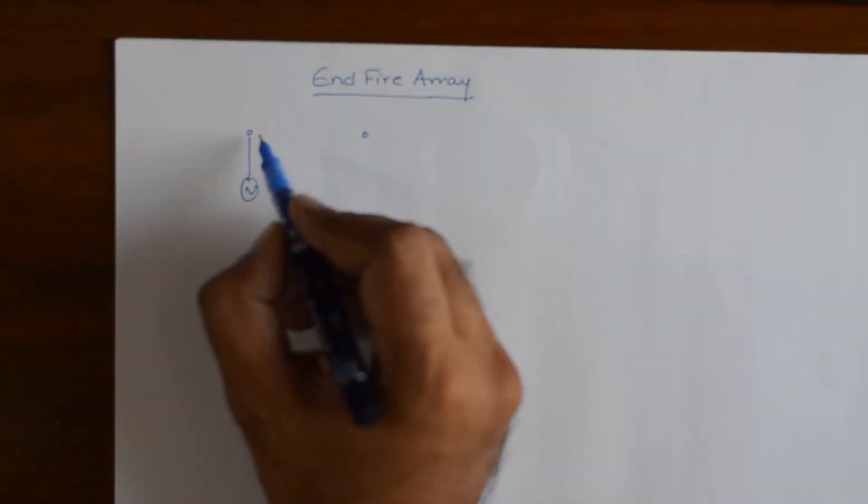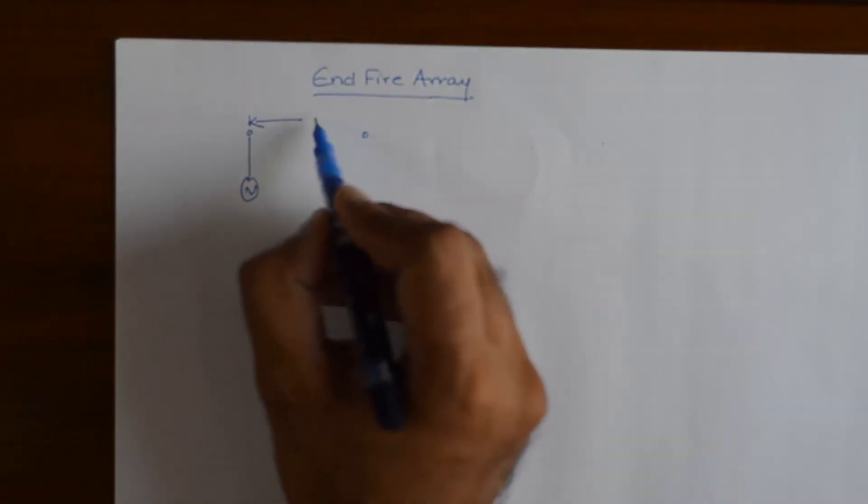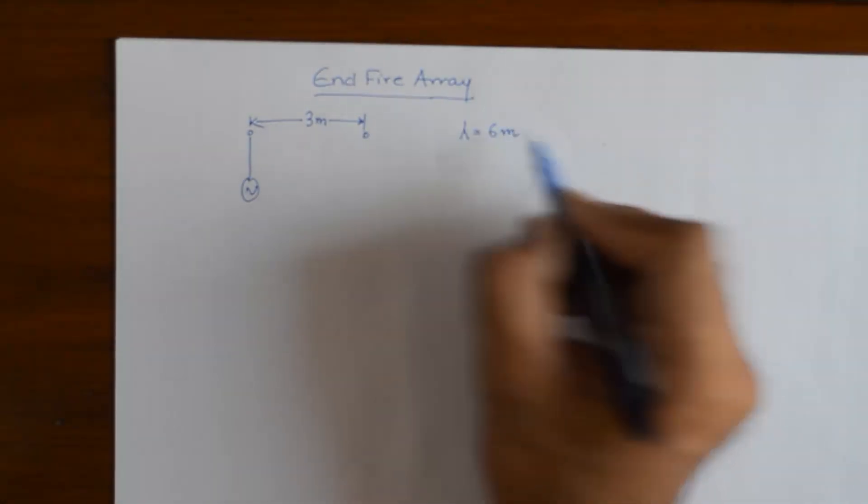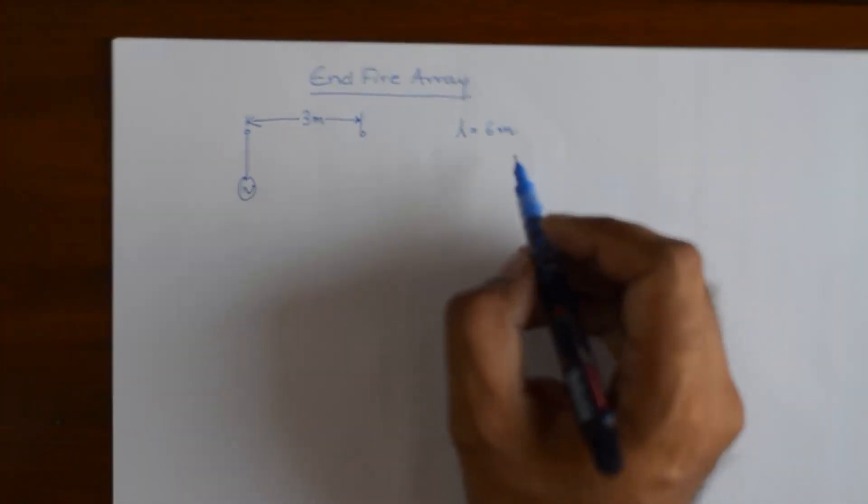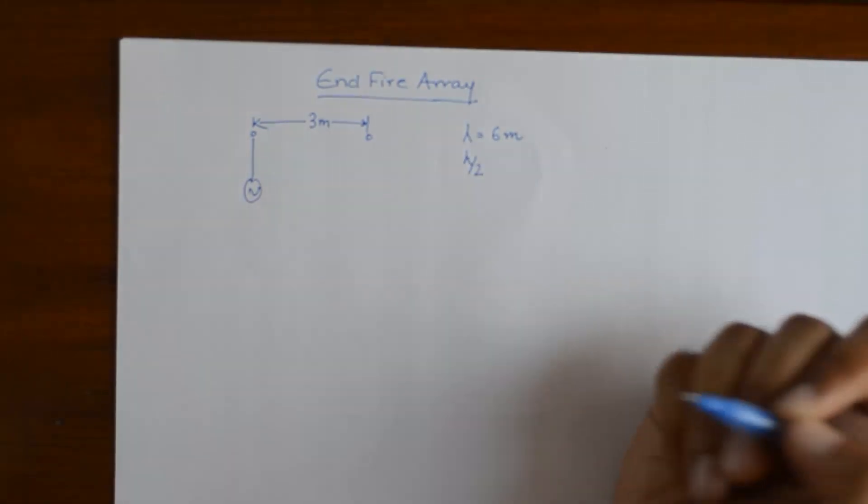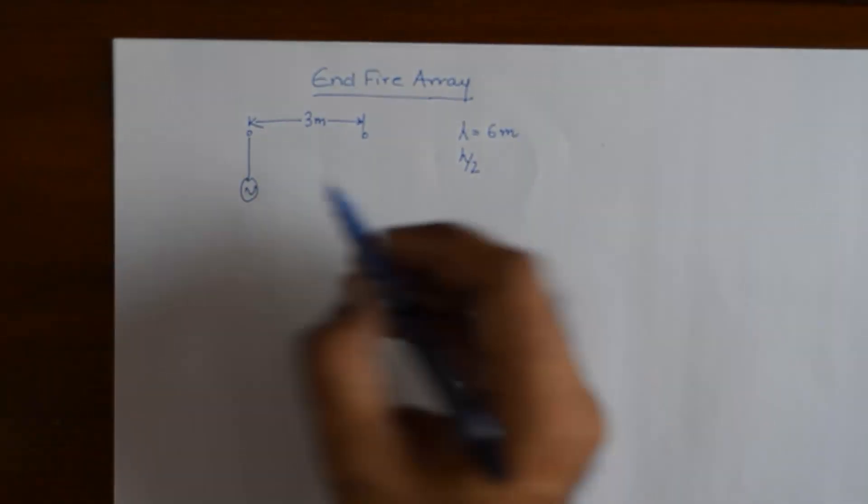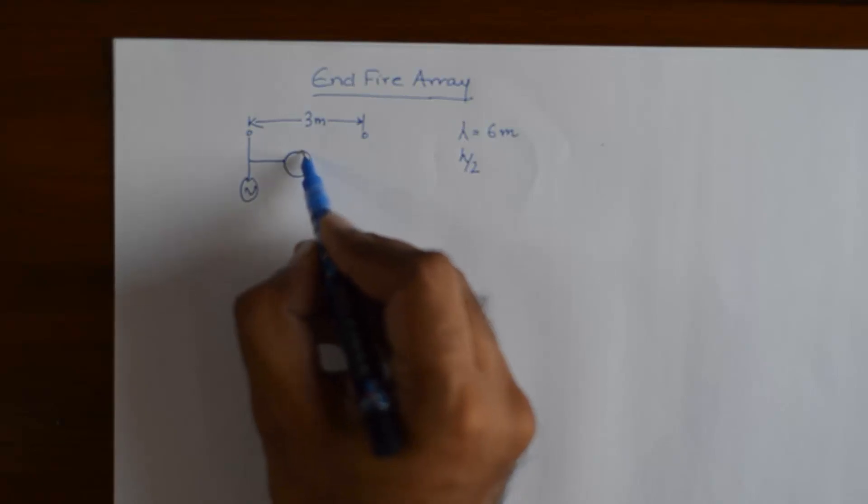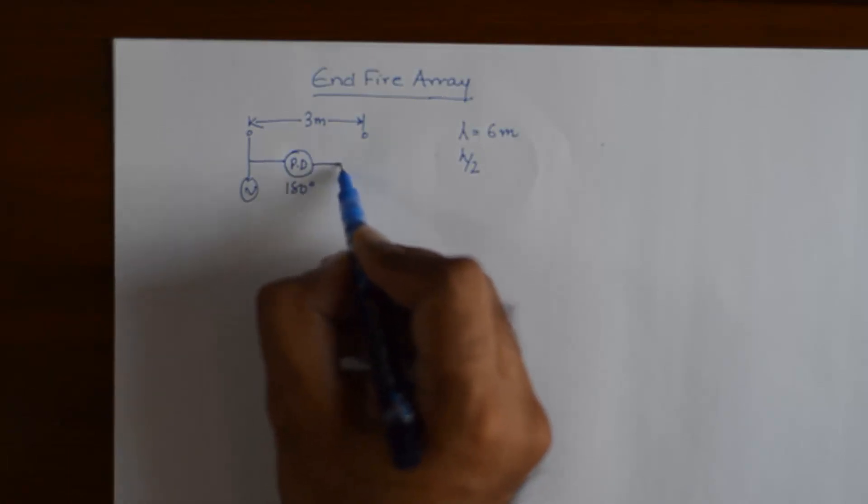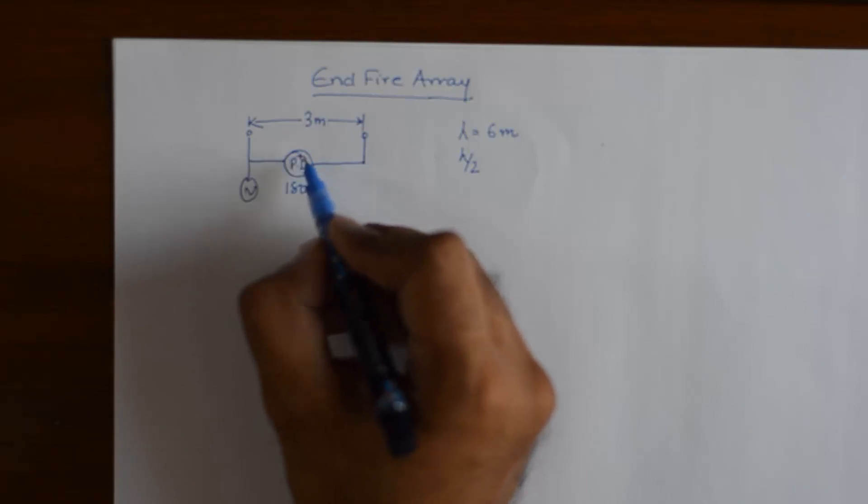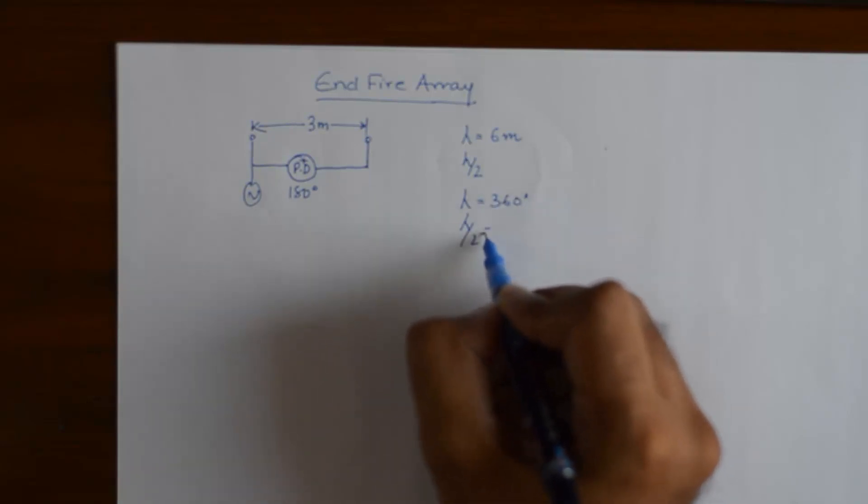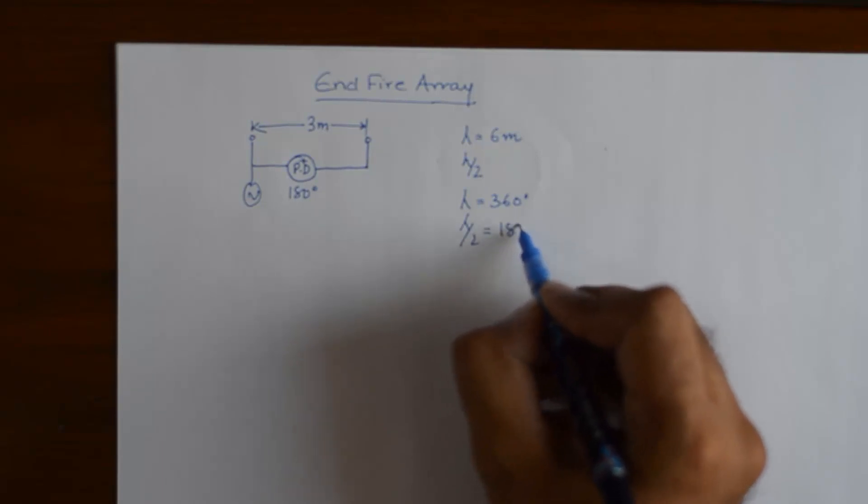Now for example, I have kept the distance between the two elements to be equivalent to 3 meters and we are operating at a lambda of 6 meters. So the distance between the elements in terms of lambda becomes equivalent to lambda by 2. So I'll have to give a phase shift of 180 degrees in progressive elements because lambda is a representative of 360 degrees and lambda by 2 will be a representative of 180 degrees.